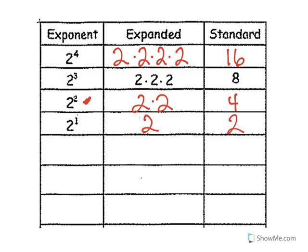Now we're going to finish this chart by doing two to the zero, then decrease to two to the negative one and two to the negative two. Something we're going to learn today: any number, any variable, anything to the zero power is one. So it's going to be a one — anything to the zero power automatically becomes a one.